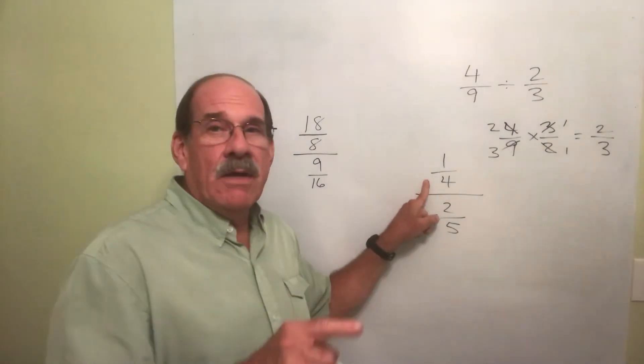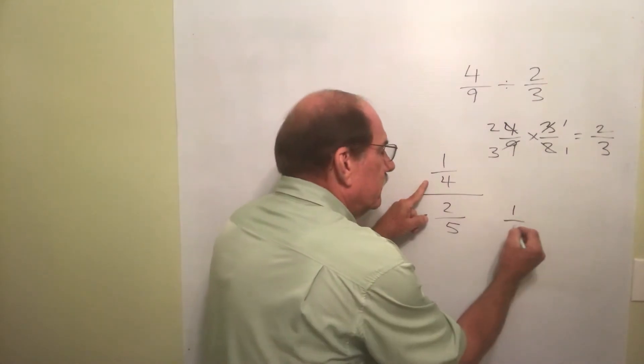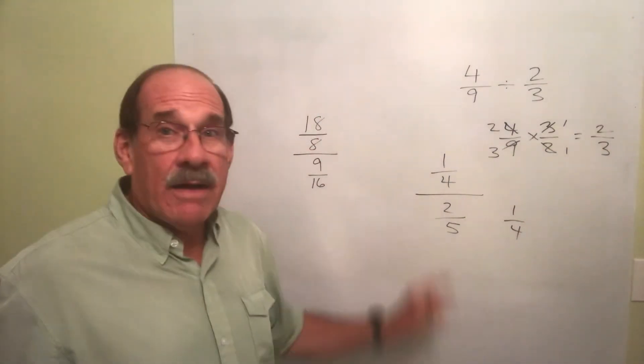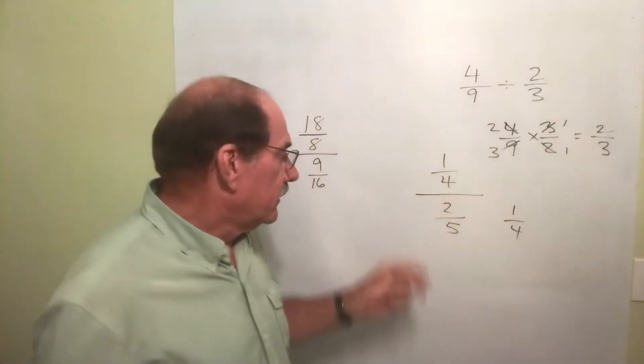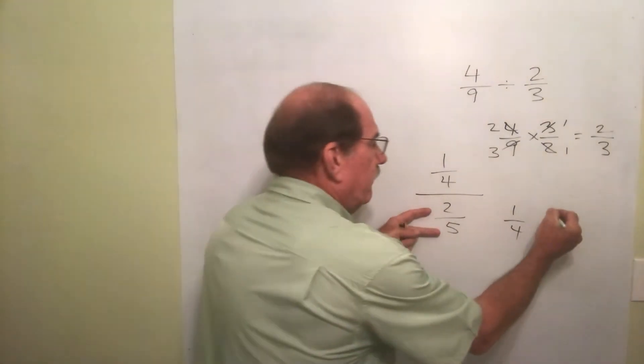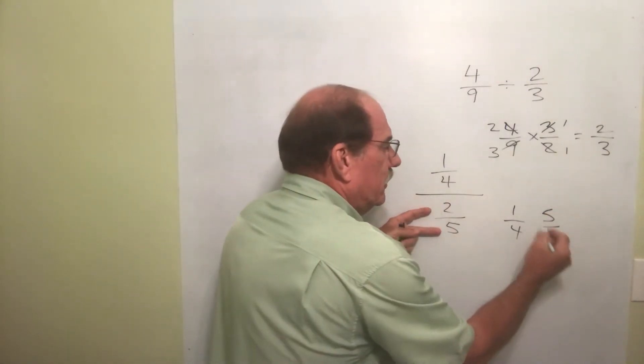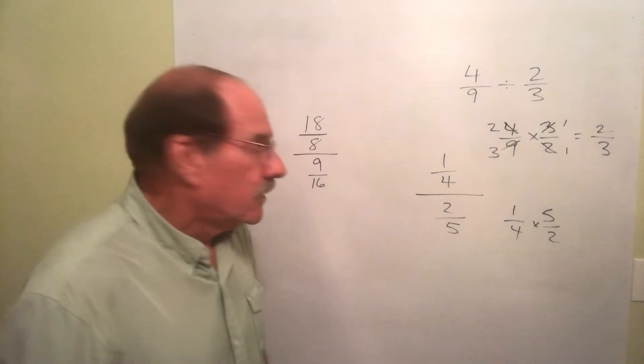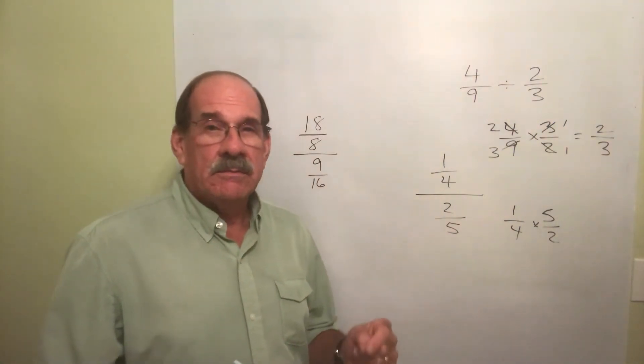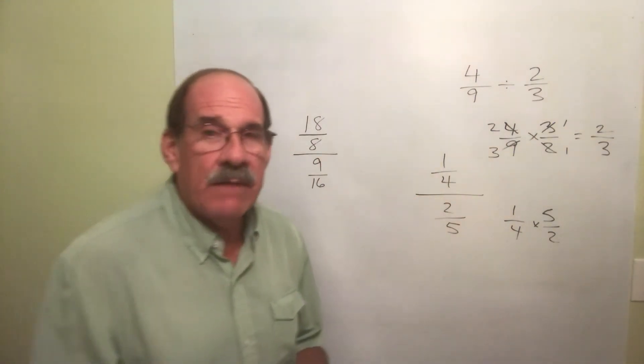One-fourth, the top number, leave it alone. The bottom number, I have to flip it over. Flip this over. Now, that puts a five up here, the two down here. Now, remember, this canceling out, reducing before you multiply.